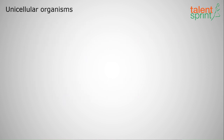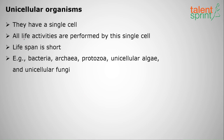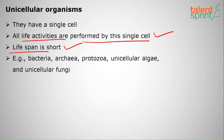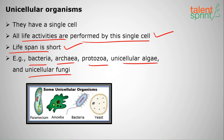Now we shall have a detailed explanation. Unicellular organisms, as the name says, have only a single cell, and all life activities are performed by that single cell only. That's why their lifespan is very short. The best examples are bacteria, archaea, protozoa, unicellular algae, and unicellular fungi. Note that multicellular algae and fungi also exist, but unicellular algae and fungi are the examples here.